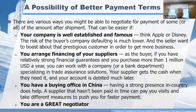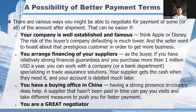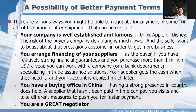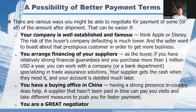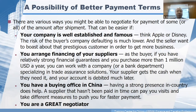Is there any other possible or better payment term under TT in China? We've talked about the 30% and 70% arrangement and the 70% being paid after shipment. There are various ways you might be able to negotiate payment terms — the amount paid after shipment can be adjusted under certain conditions.